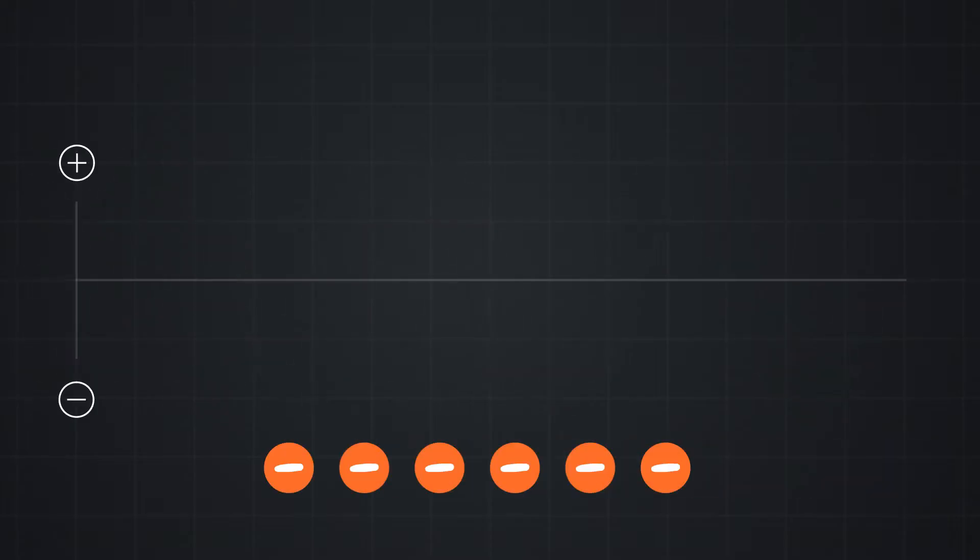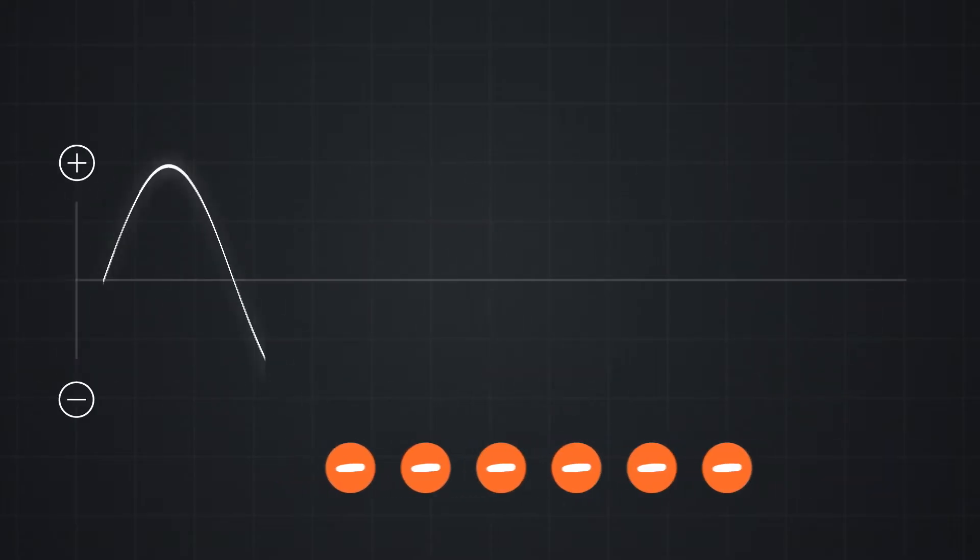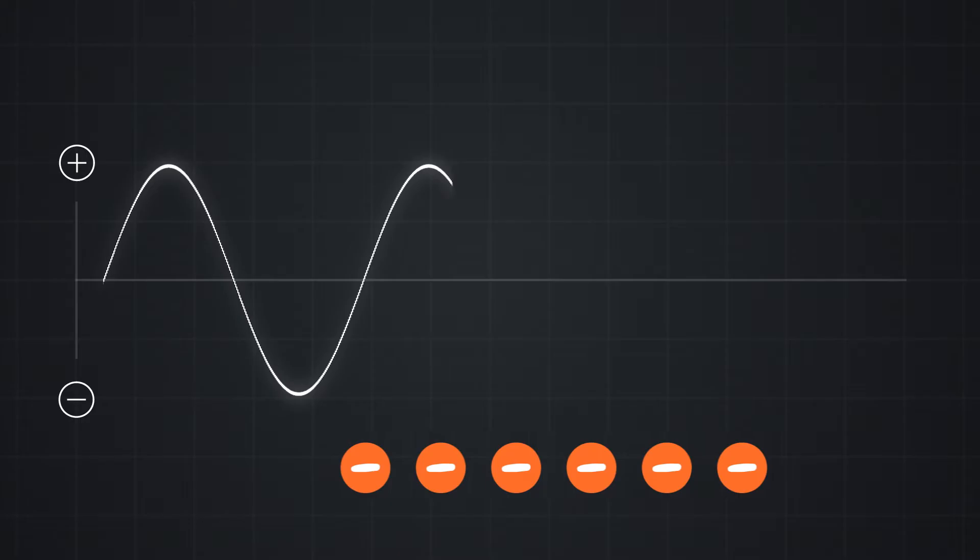This changing voltage corresponds to the electrons flowing first in one direction, and then another. As the current is still going through a load, it's still doing work and requires power.